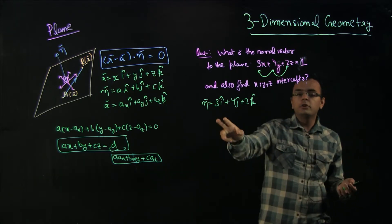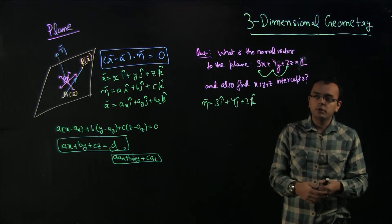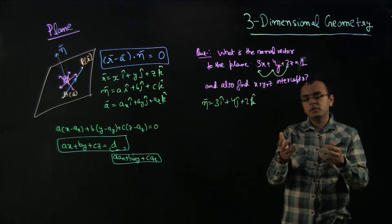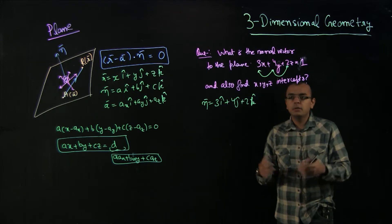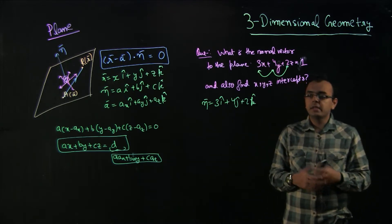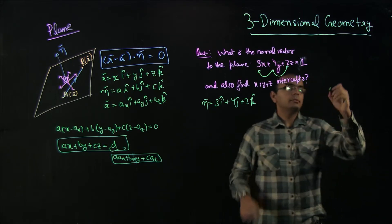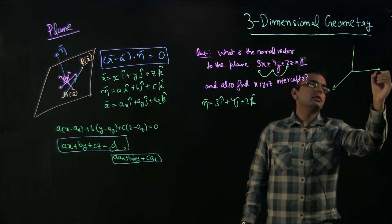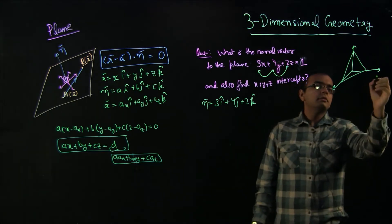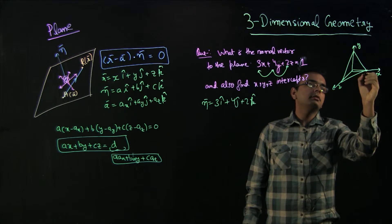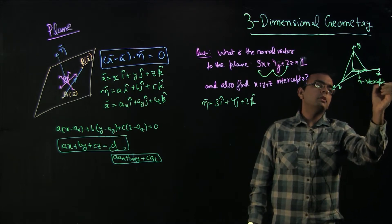You should know that the coefficients give you a normal vector, and if you need other normal vectors you can multiply by any real number. Now, what is the x intercept, y intercept, z intercept? The x intercept is the value of x when y and z are both 0. So putting y = 0 and z = 0 gives x = 1/3, meaning the point is (1/3, 0, 0). Similarly, the y intercept is (0, 1/4, 0) and the z intercept is (0, 0, 1/2).